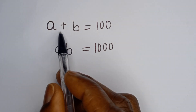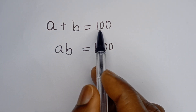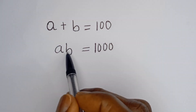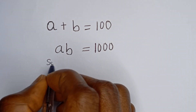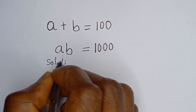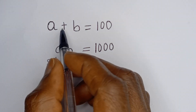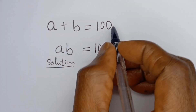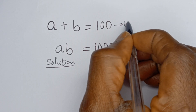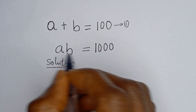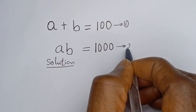Hello. How to solve for A and B in this equation? A plus B is equal to 100 — let's call this equation 1. AB is equal to 1000 — let's call this equation 2.